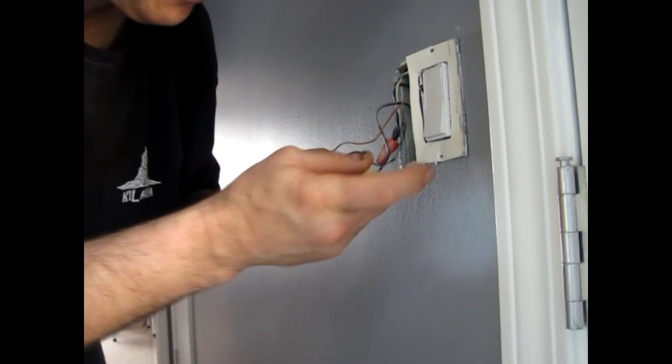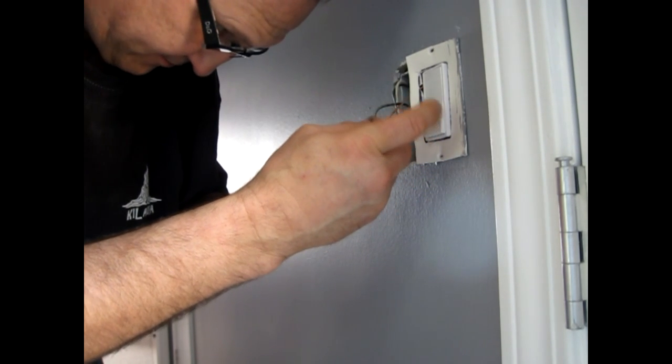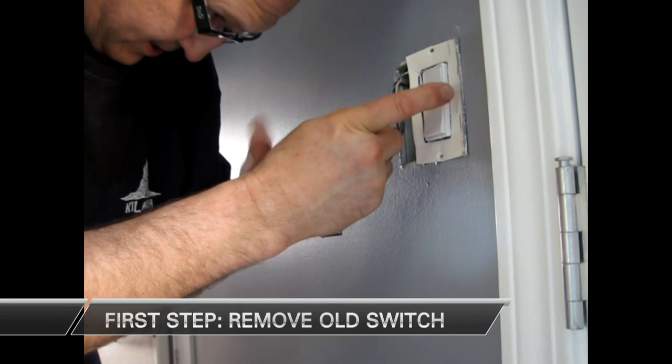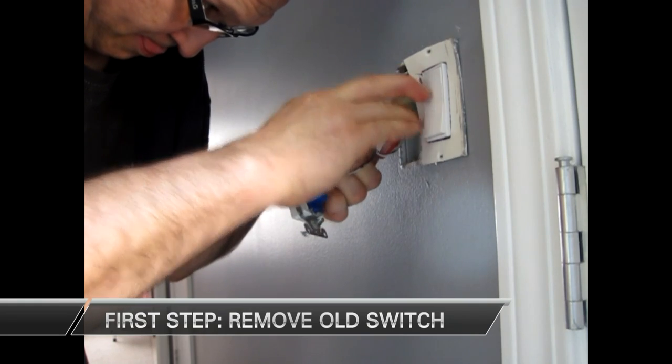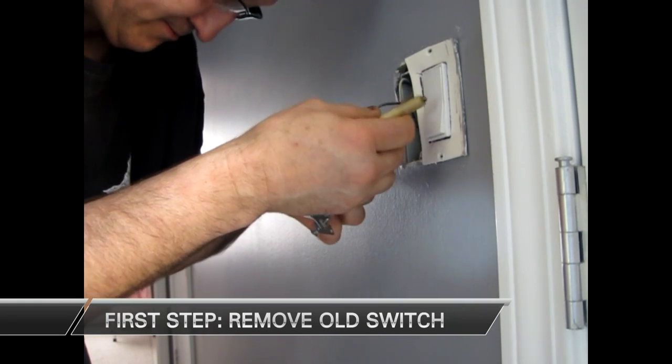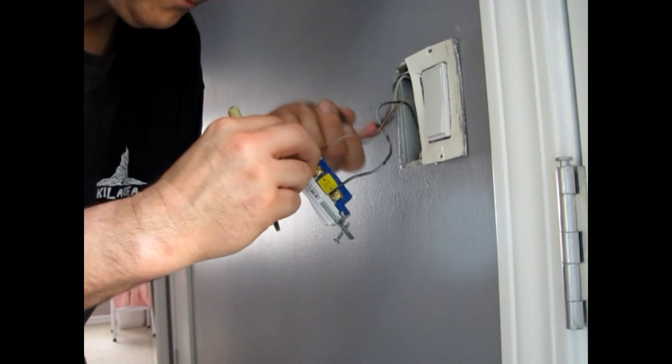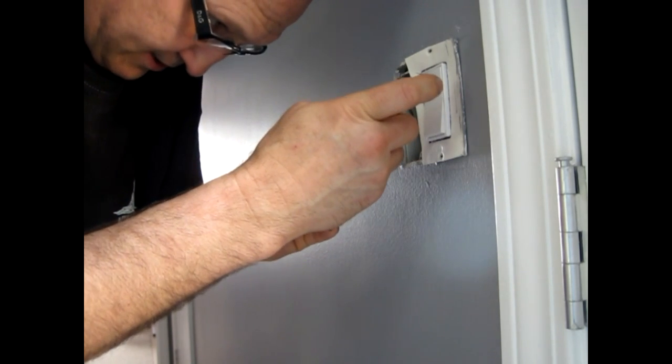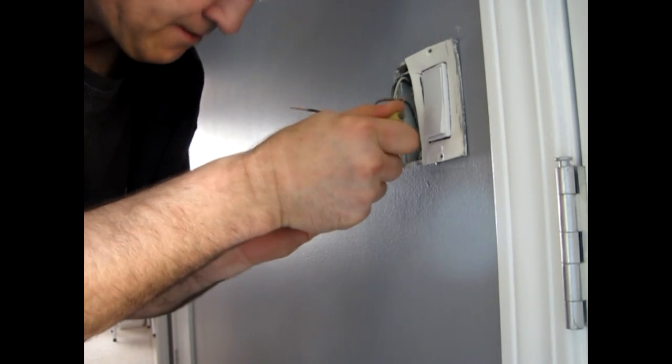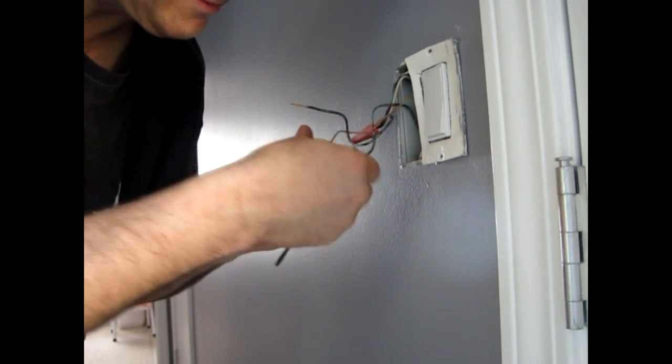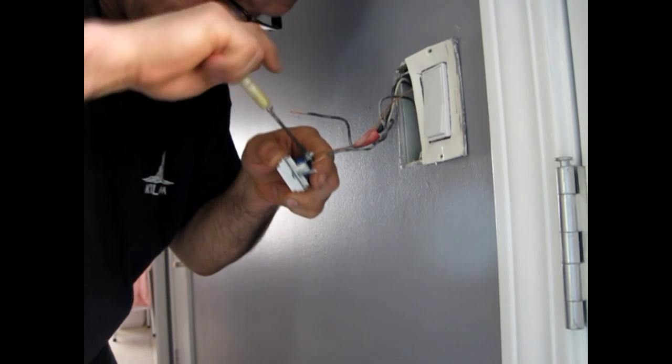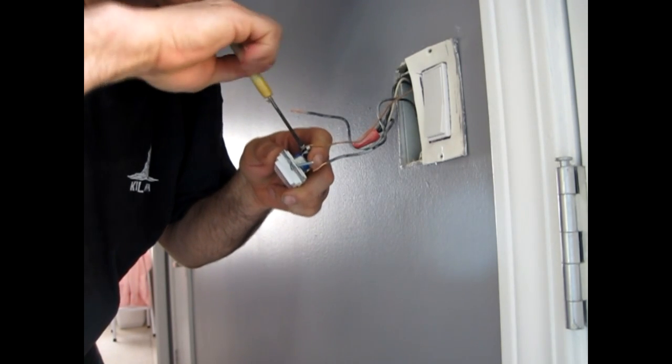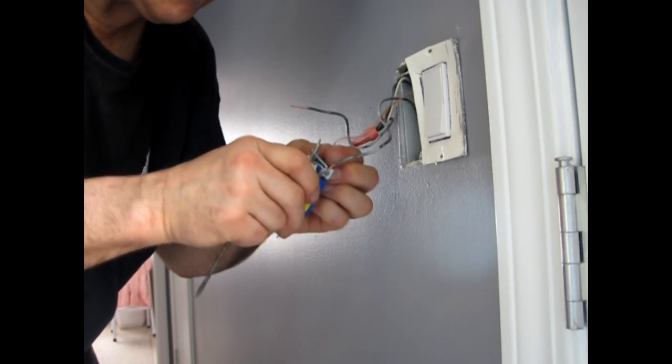All you have to do is, there's a little slot in there for the screwdriver. Flat blade is real small. Push down. And the wire pops right out. Push down on the other one. And the wire pops right out. And screw the green, which is your ground. It pops right out.